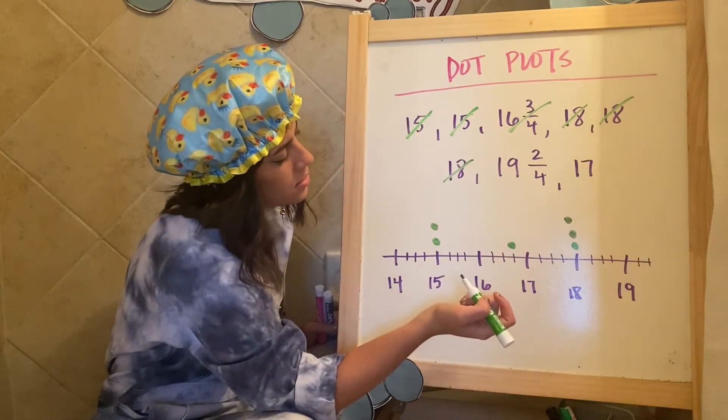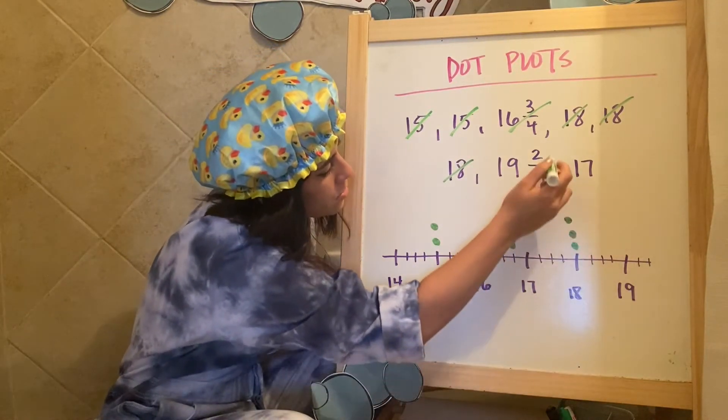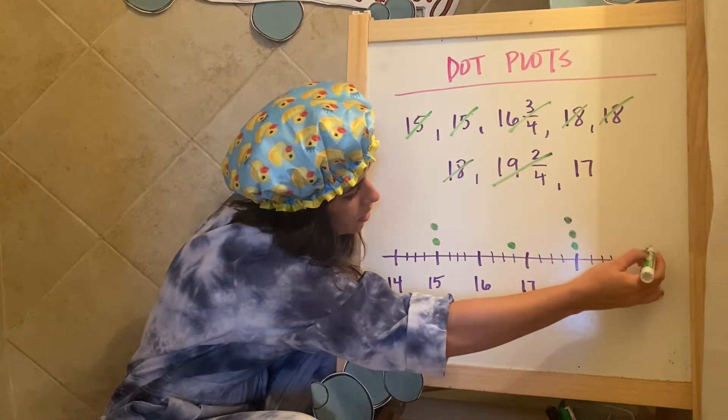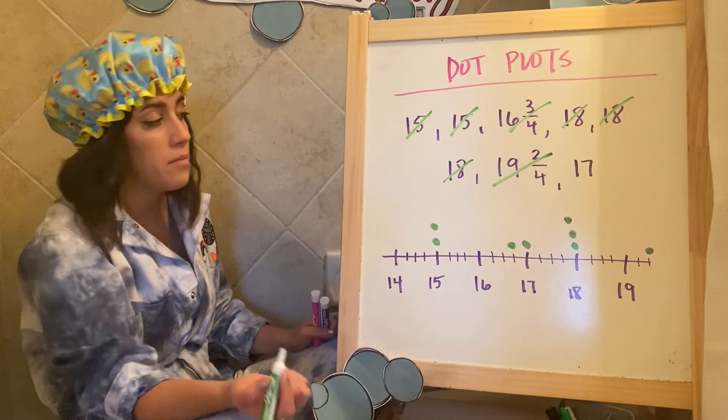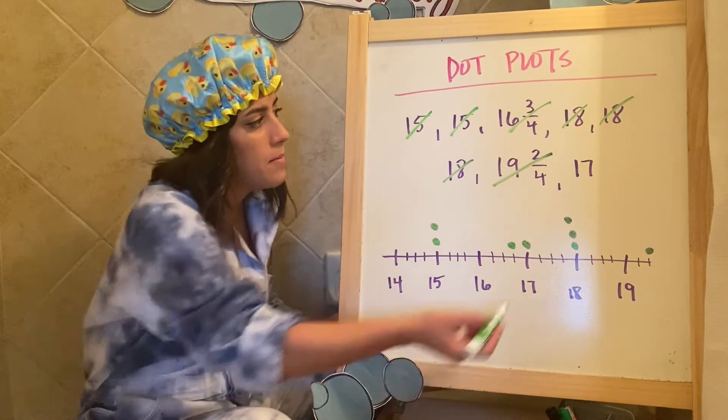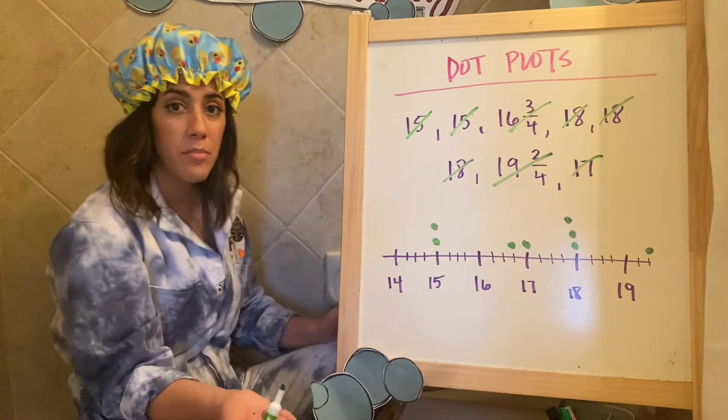Then I see 19 and two fourths, 19 and one and two fourths. So one dot here. And then I see a 17. So that's my dot plot. That's it.